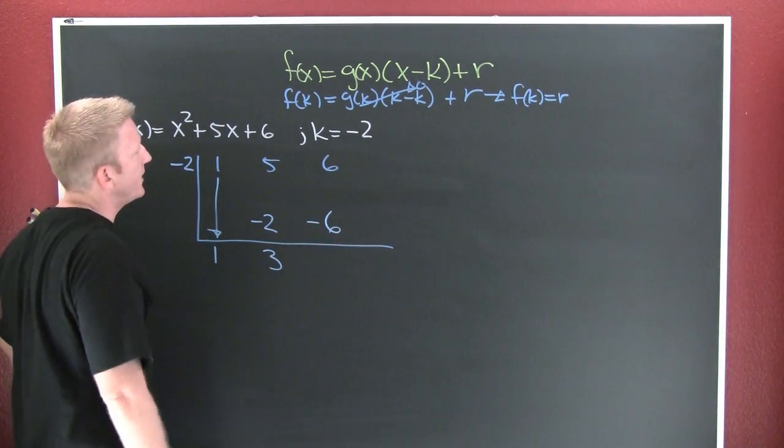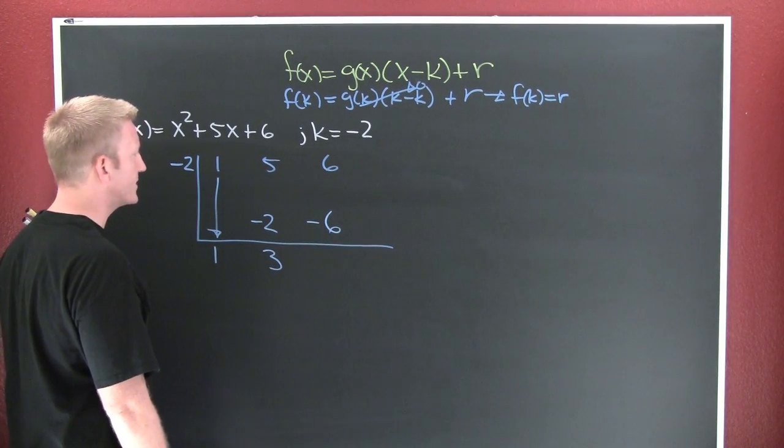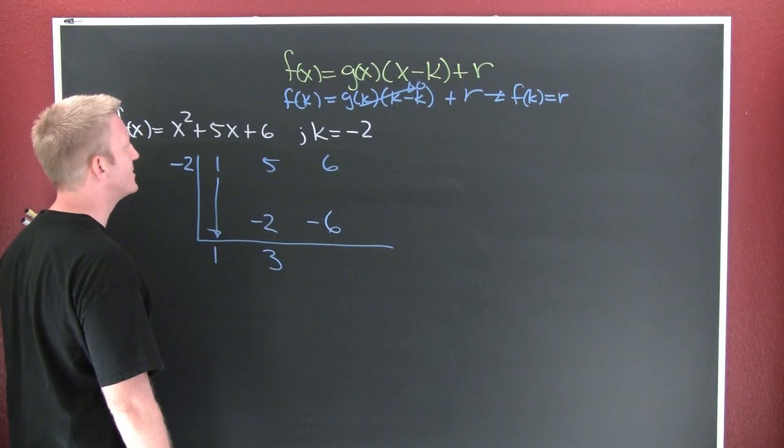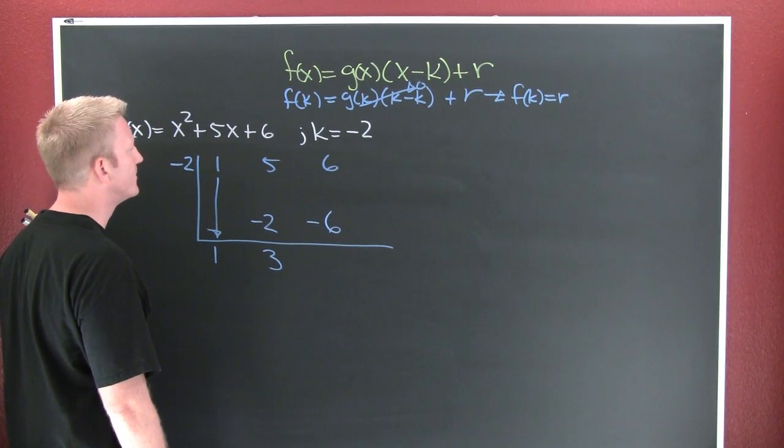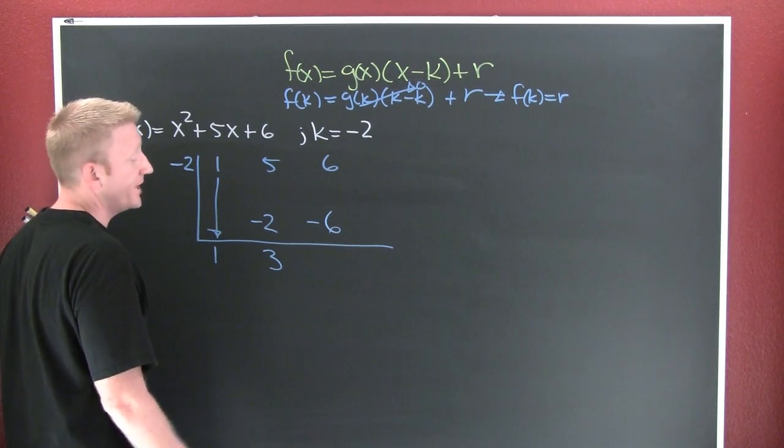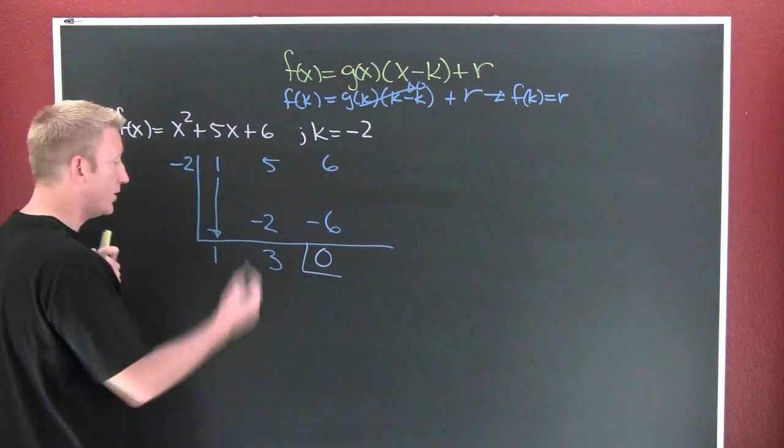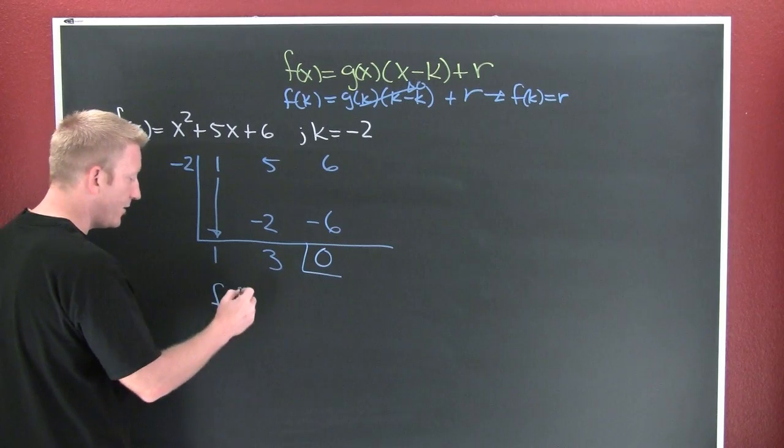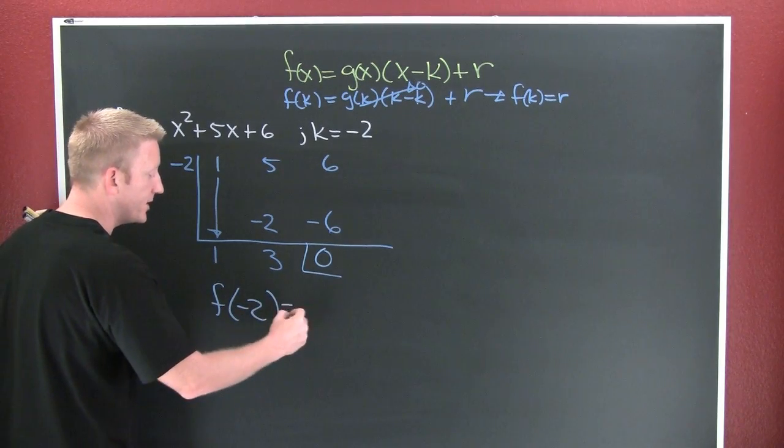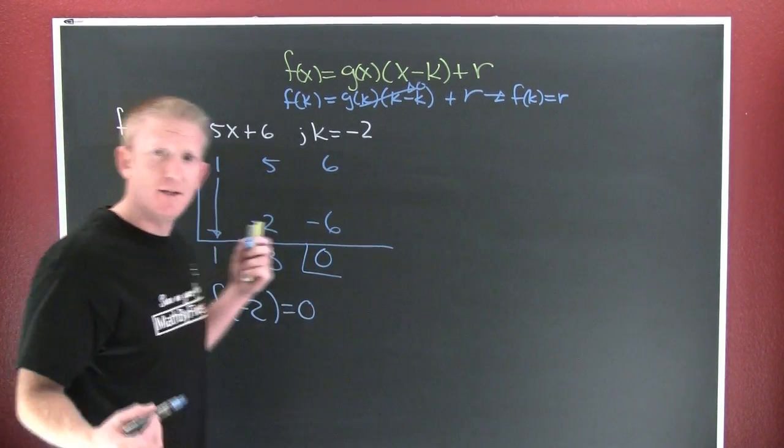Minus six... wait, this whole thing is screwed up. No, it's fine. Zero. So what does that say? That says f of minus two is equal to zero. I was wrong once—it was that time that I thought I was wrong.